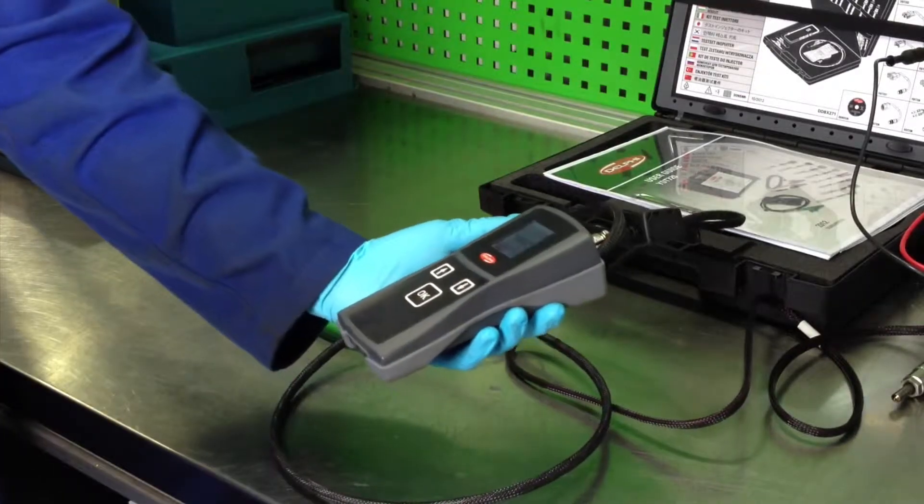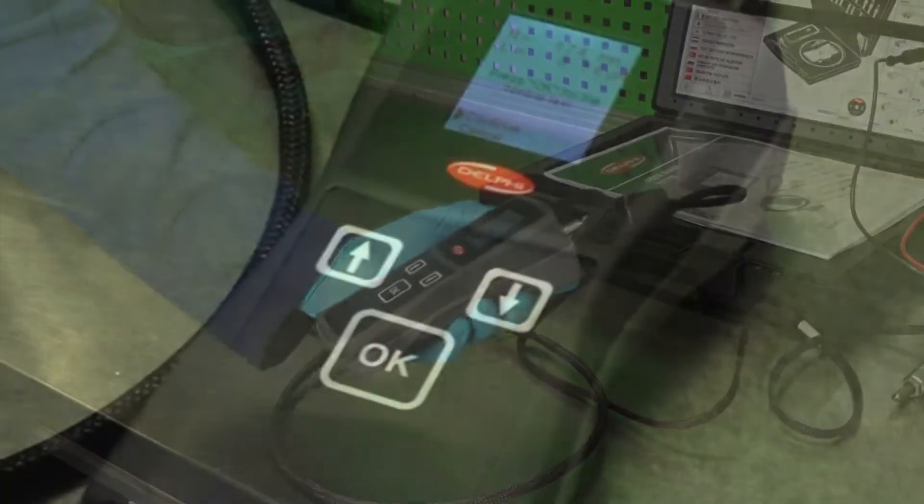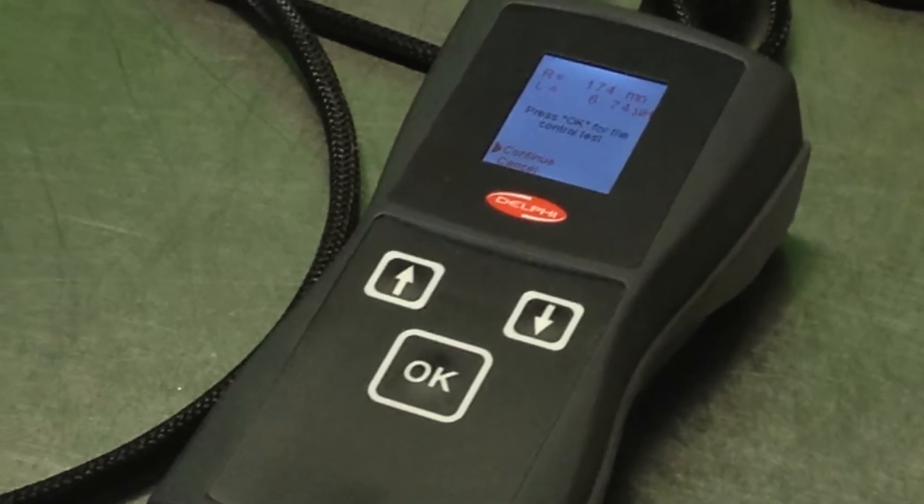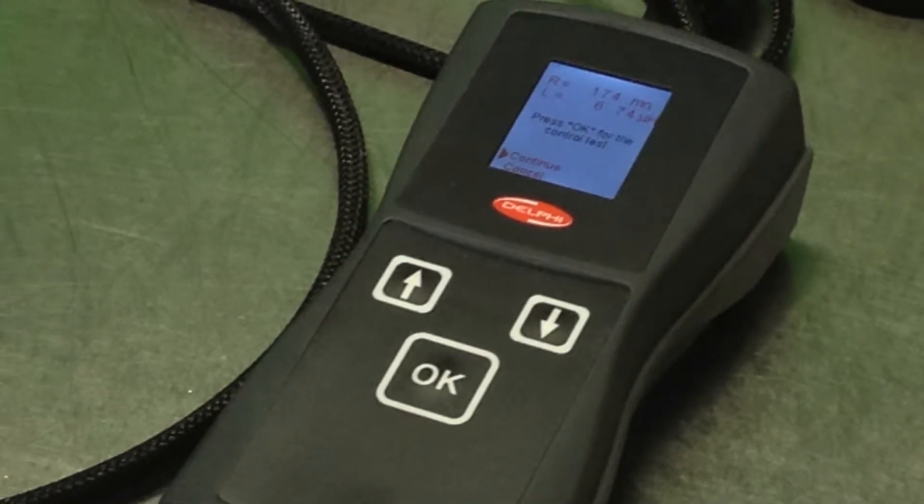After a visual inspection, we carry out an insulation resistance check. This is very important to ensure the injector will operate correctly when tested.